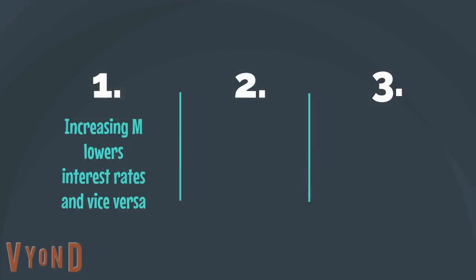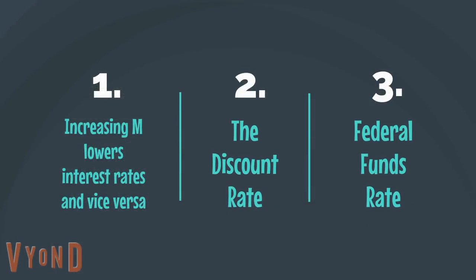That's going to affect interest rates, because the money supply moving up and down makes money more or less scarce — and interest rates are the price of money. When the Fed increases the money supply — what's called an easy money policy — interest rates go down. If it decreases the money supply, interest rates go up.